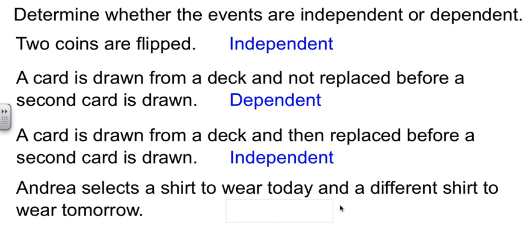And then we have our friend Andrea here, who selects a shirt to wear today and then, obviously, a different shirt to wear tomorrow. That's a dependent situation because her choices tomorrow are affected by which choice she made today. If she wears the blue shirt today, then she doesn't have that option tomorrow. So now her choices have been changed.